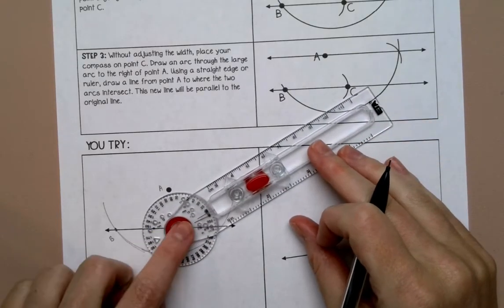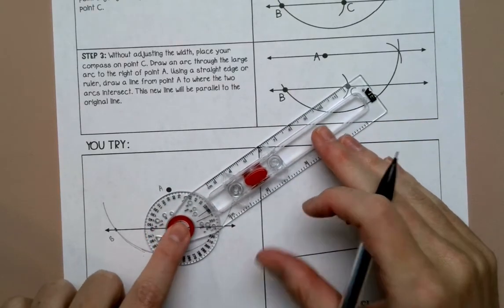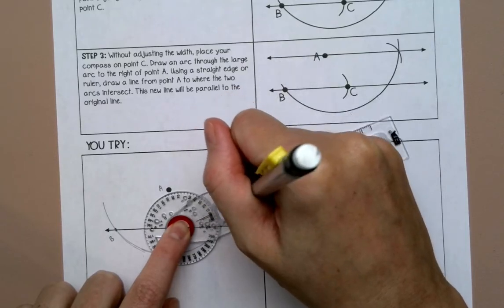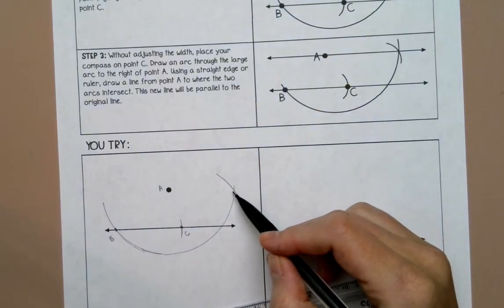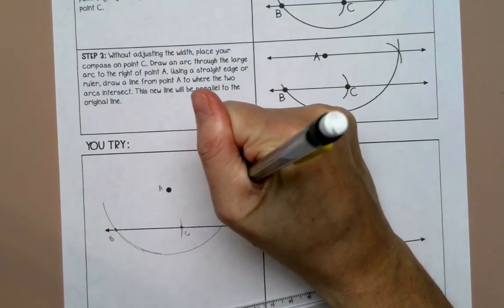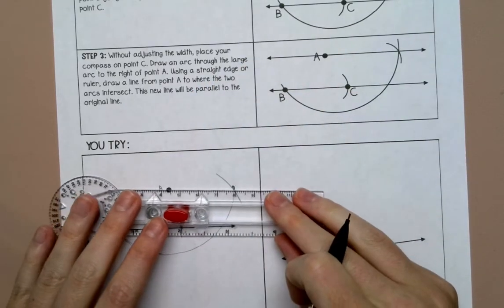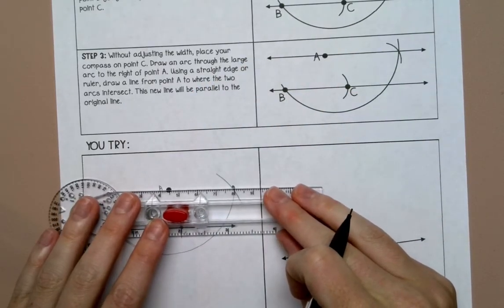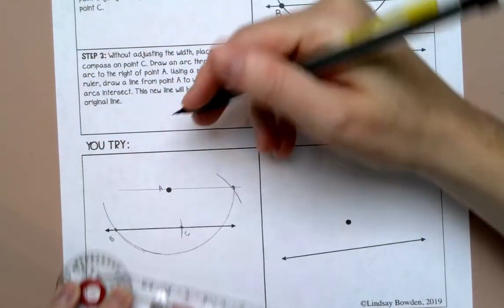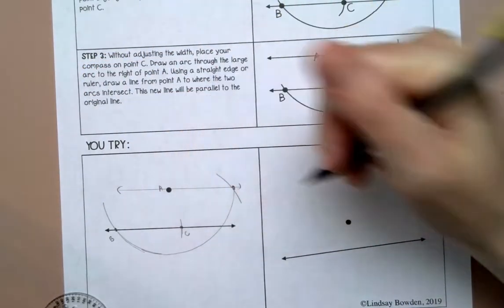Then without adjusting my compass, I'm going to put my compass on C and draw another arc here so that it goes through your original point, and then I'm going to connect those. That should be parallel to your original line.